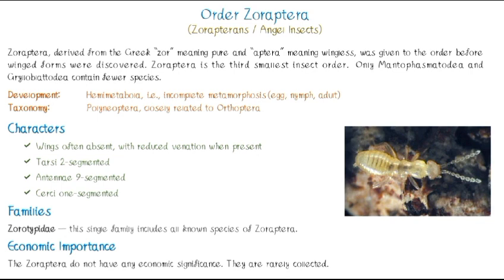If you are talking about development, this is called Hemimetabola — they have incomplete metamorphosis, meaning they are exopterygota with three developmental stages: egg, nymph, and adult. In taxonomy, these are Polyneoptera and are closely related to the Orthoptera.